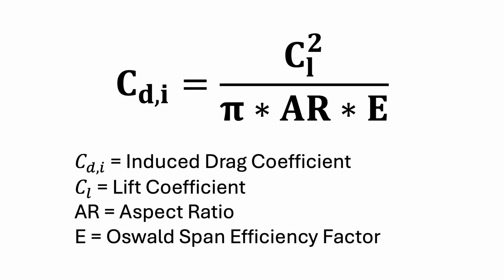To answer this, we're going to have to take a look at the equation for the induced drag coefficient. The induced drag coefficient is calculated by the equation shown here. The total drag coefficient is equal to the sum of the induced drag coefficient and the parasite drag coefficient, which we learned about in our video about parasite drag. Let's start taking this apart and see what we can do to reduce the induced drag.